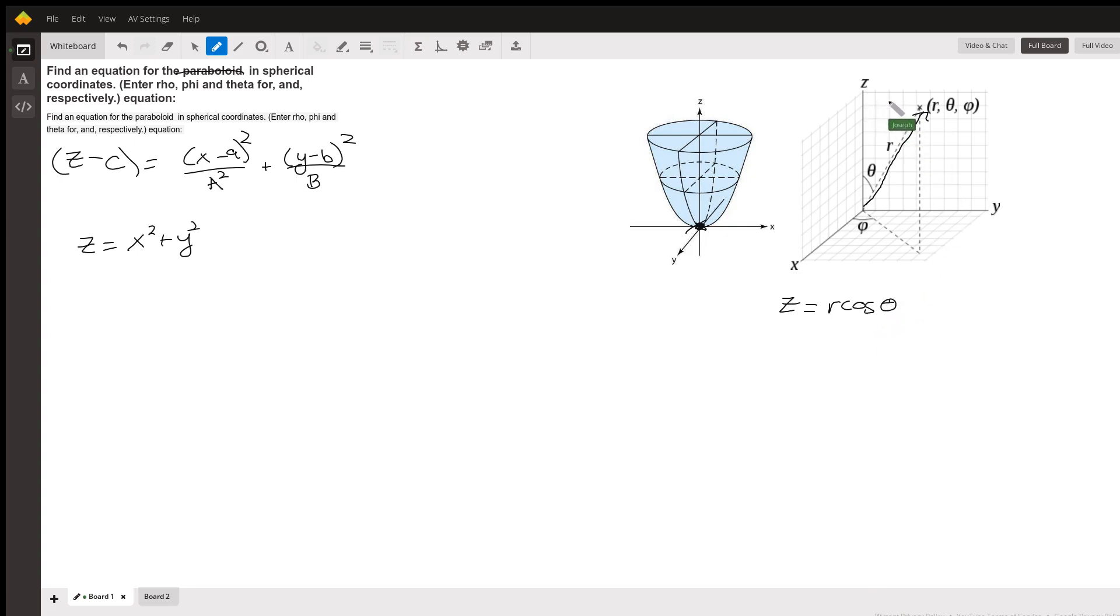Now this distance here, which is the same as this distance here, would be r times the sine of that angle. The first observation we make is that this distance here is the same polar radius that we are used to in the xy plane.